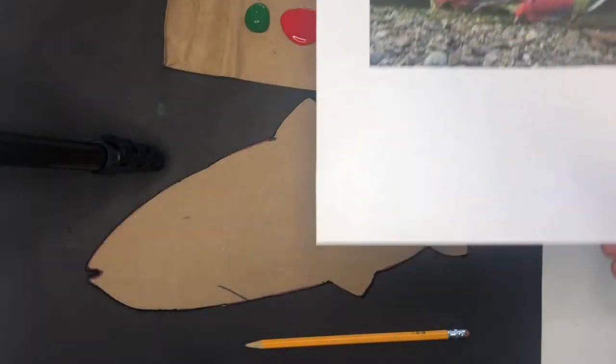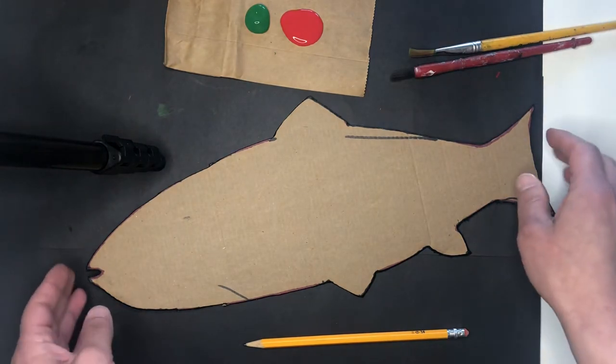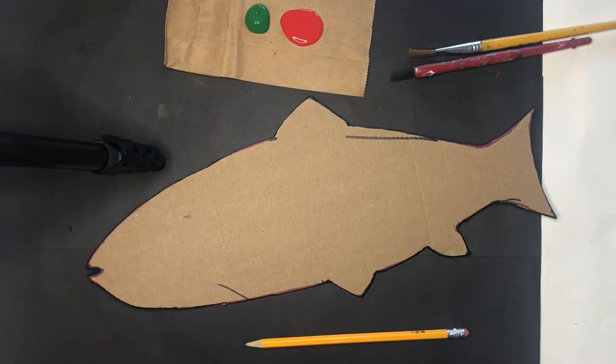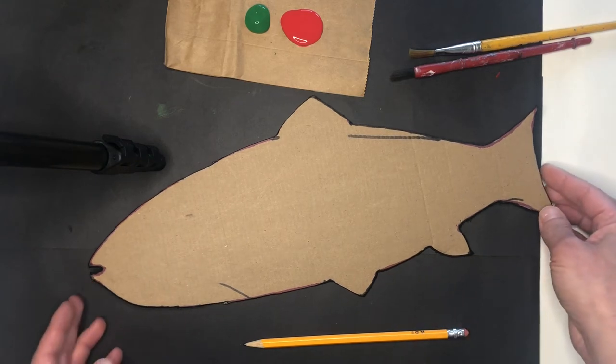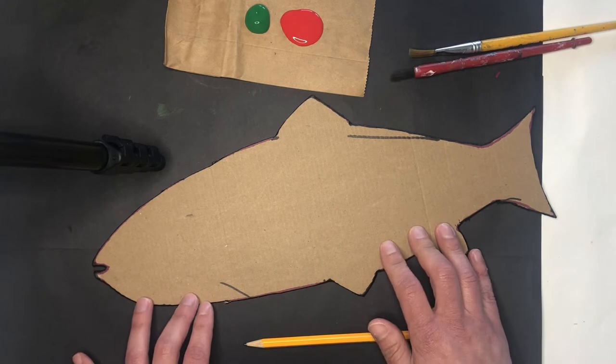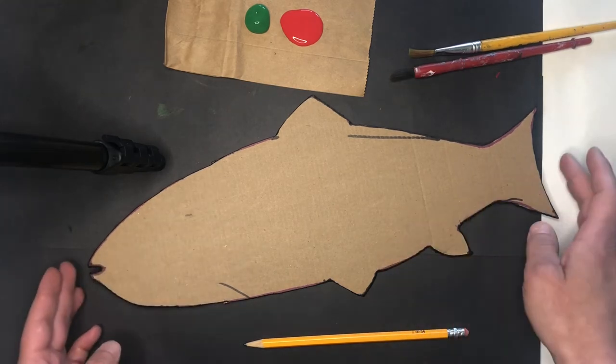So today we're going to paint the red and green parts of our fish, and then next week we'll add some details using crayons and oil pastels to create the different color that's on the salmon's belly and his eye and other parts of him.